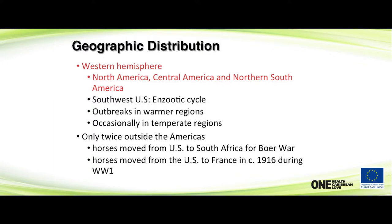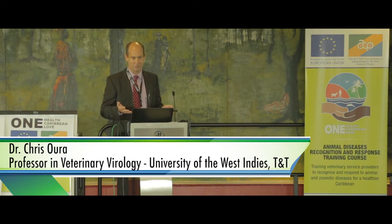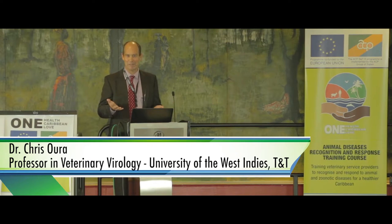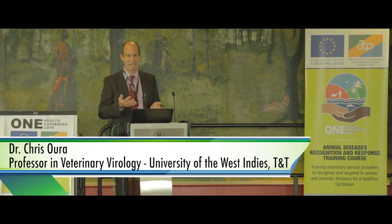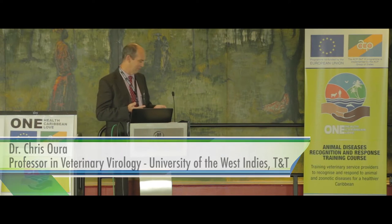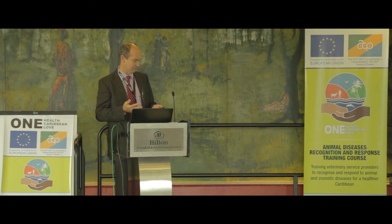Why is it important? It is present in the region — in North America, Central America, and Northern South America. There tend to be more outbreaks in warmer regions, although you do get it in temperate regions, because it's probably transmitted by insects. In Caribbean countries like here, we have lots of insects all year round, so we have an especially high risk for these types of viruses.